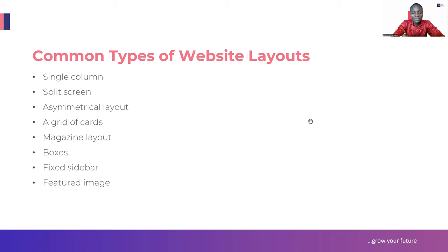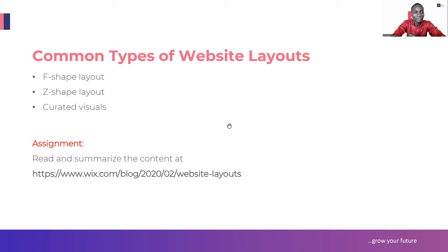You can have single columns, split screen, asymmetrical layouts, grid of cards, magazine layouts, boxes, first sidebar, featured image, F-shaped layout, Z-shaped layout, and curated visuals. These are different kinds of layouts you can use to build your website. I will not go deep into that because that's a lot on its own - that will be your assignment for this particular class.